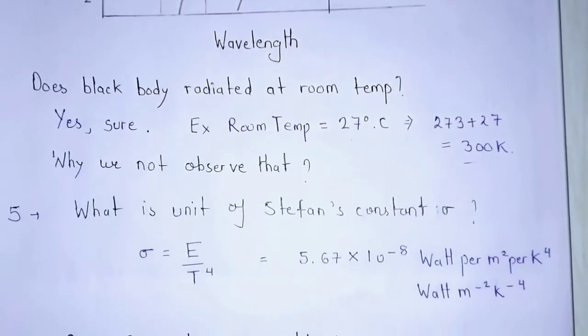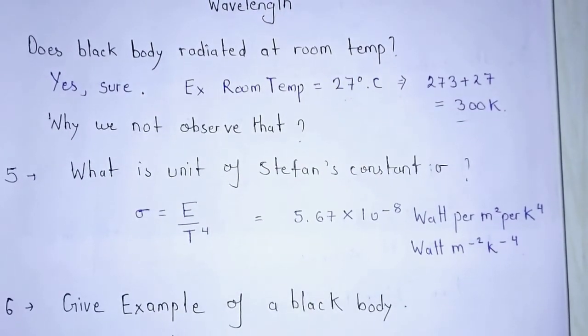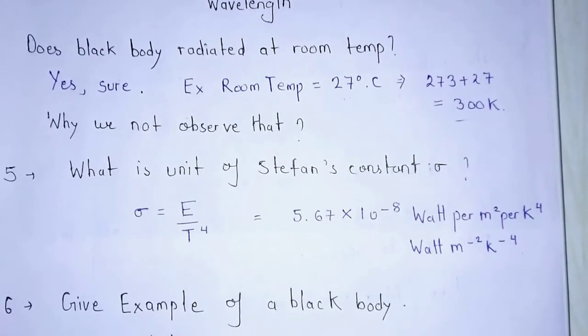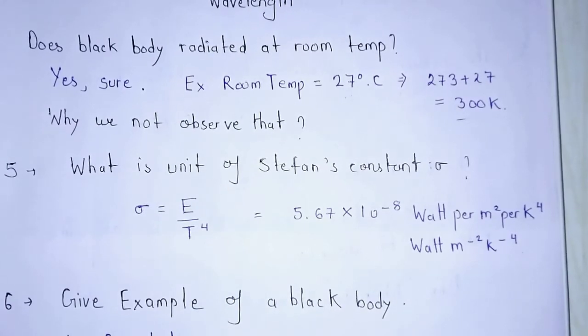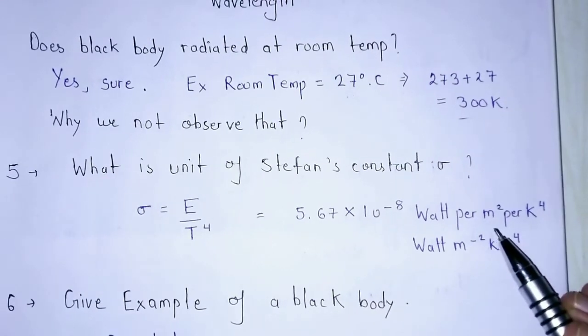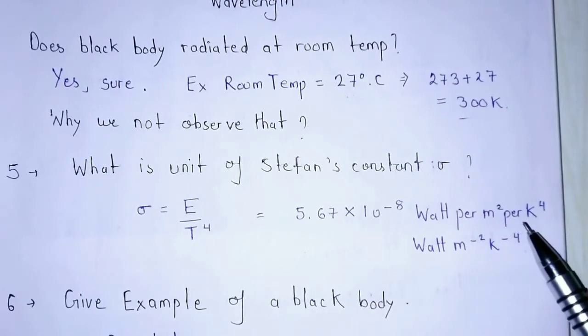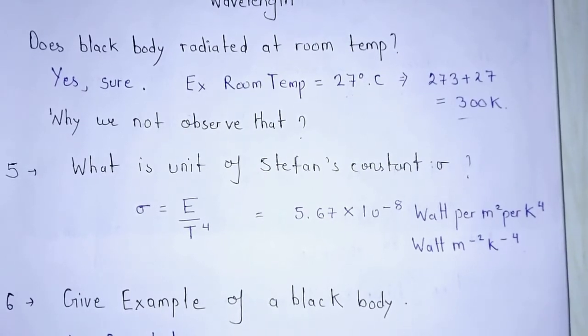Fifth question, what is the unit of Stefan's constant sigma? If it comes to value, it is 5.67 × 10^-8 and its unit is watt per meter square per Kelvin to the power 4. That can be written in this form also.